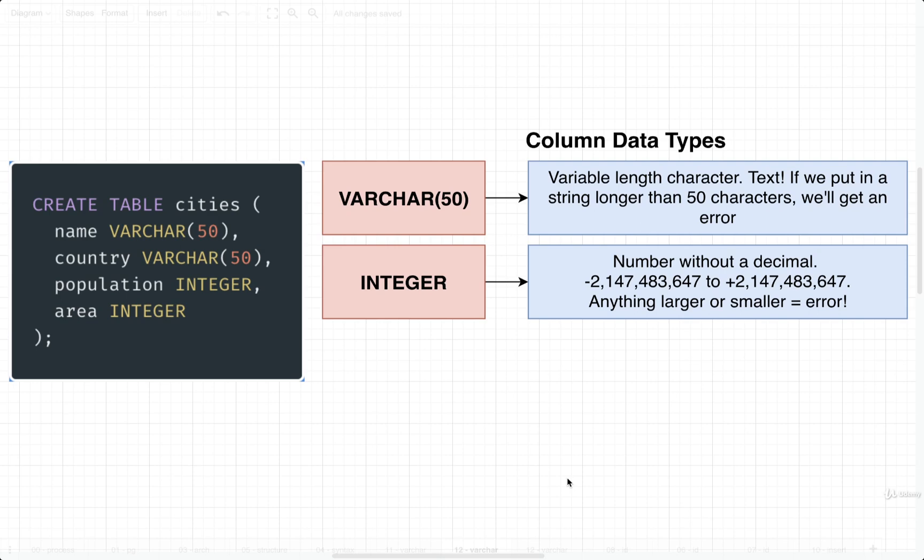If we ever try to insert a city with a name or a country longer than 50 characters, then Postgres is going to give us an error. The number on here is just restricting the length of string that we can put into this field.